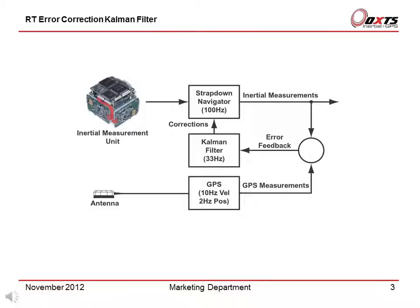The GPS receiver can operate at 20Hz, but there is no additional information in the 20Hz signal, so running the GPS faster would not make the outputs more accurate. Instead, there are better ways of using the CPU power of the navigation computer. We have found that using the 10Hz GPS update compared to 5Hz does result in an improvement, but it is not very significant.